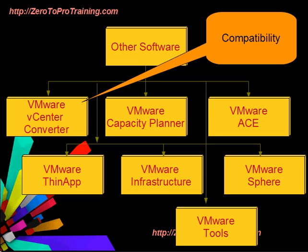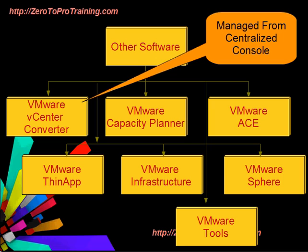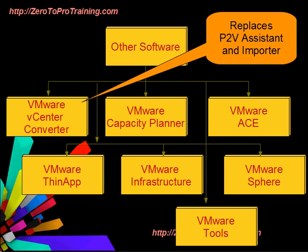Converted VMs are compatible with VMware ESX, ESXi, VMware Server, and VMware Workstation. A P2V conversion can be done from any physical machine running Microsoft Windows XP or later, or Linux — Linux only works on the standalone version. Conversions can be managed from a centralized console, and multiple conversions at the same time are allowed if you are using the enterprise version.